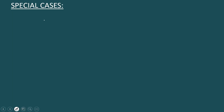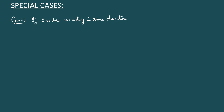We shall see the special cases of the parallelogram law. Let us take case one: if two vectors are acting in the same direction, what will the resultant value be? Let us say there are two vectors, A and B, both acting in the same direction. The angle between the two vectors is zero degrees — they are parallel vectors.